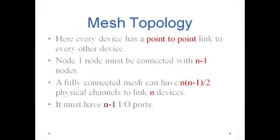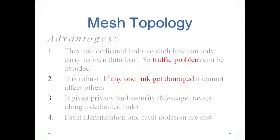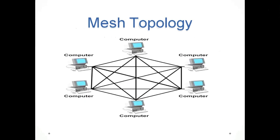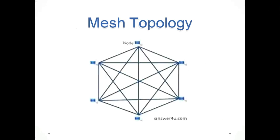Each device must have n minus 1 I/O ports. Advantages of mesh topology: they use dedicated links, so each link can only carry its own data load and traffic problems can be avoided. It is robust — if any one link gets damaged it cannot affect others. It gives privacy and security since messages travel along a dedicated link. Fault identification and isolation are easy. In this picture, six computers are connected with all other computers, each connected directly through dedicated lines.